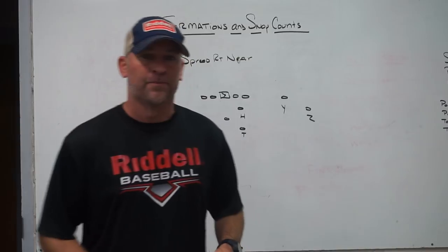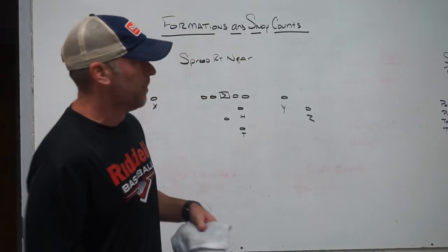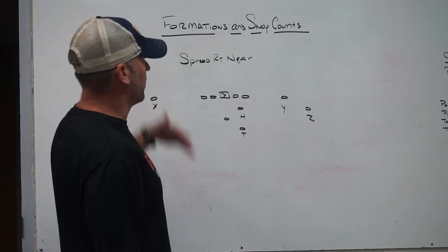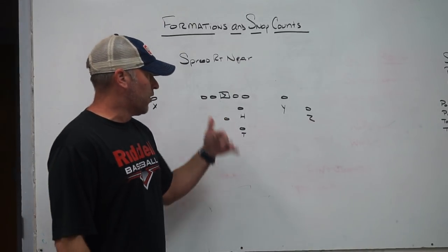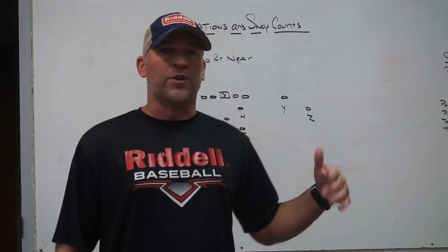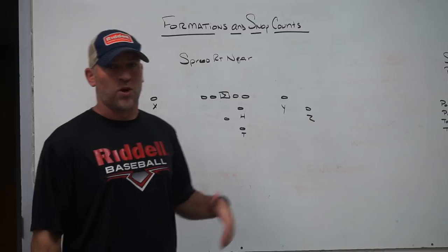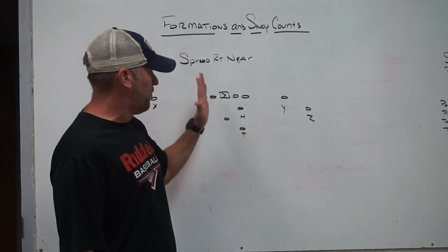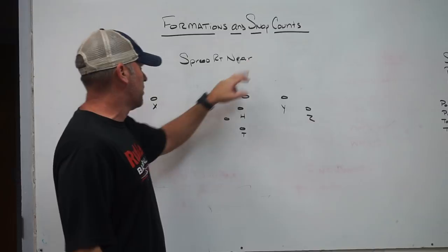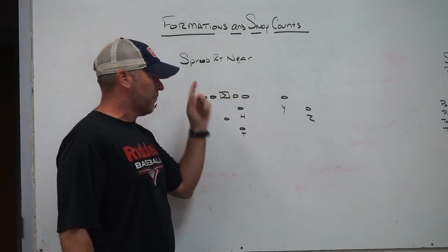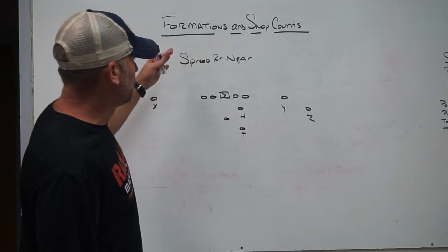For us, our snap counts are built into our formation names. When we get into a regular formation like this, I would call 'spread right.' I like to tell my running backs where to be — when we're in two-back sets I tell my running backs where I want them. So 'spread right near' tells me I want both backs near to the strength, stacked near side. 'Spread right' tells me my Y and Z go to the right, X goes to the left.